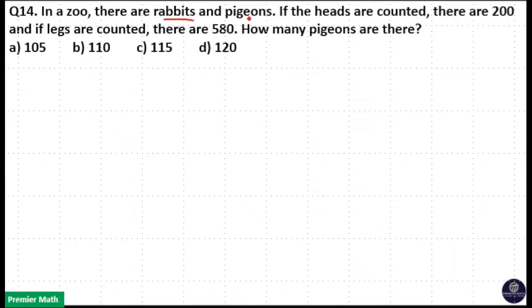In a zoo, there are rabbits and pigeons. If the heads are counted, there are 200, and if legs are counted, there are 580. How many pigeons are there?